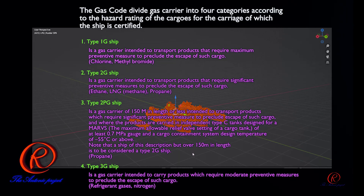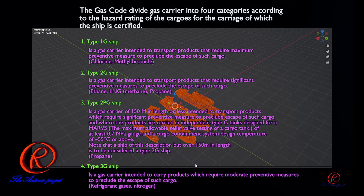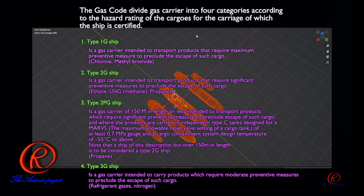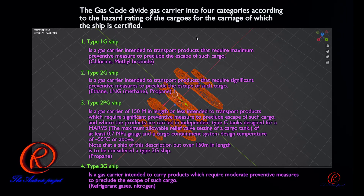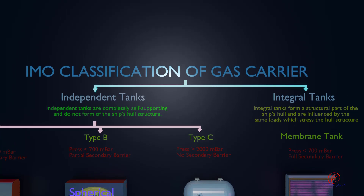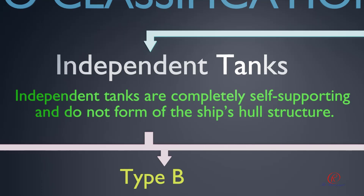Type 3G ships are gas carriers intended to carry products which require only moderate preventive measures to preclude the escape of such cargo — for example, refrigerant gases and nitrogen. IMO classification of gas carriers is further divided into two types: independent tanks and integral tanks. Independent tanks are completely self-supporting and do not form part of the ship's hull structure.